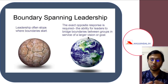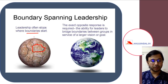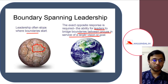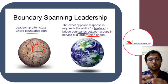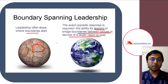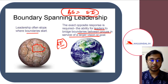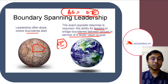To understand through an example: leadership often stops where boundaries start. We have geographical boundaries, and when these boundaries start, leadership often stops there. The exact opposite response is required — the ability for leaders to bridge boundaries between groups in service of a larger vision or goal. Boundary spanning is not typically about geographical boundaries; it is about connecting with the external environment. So boundary spanning equals external environment — if you are using the external environment for your advantage, maximizing your sales and creating a business model by using it successfully, then you are boundary spanning.